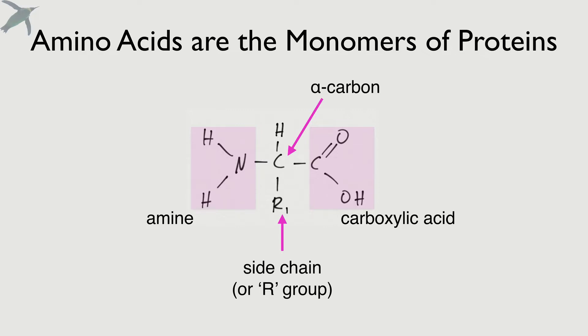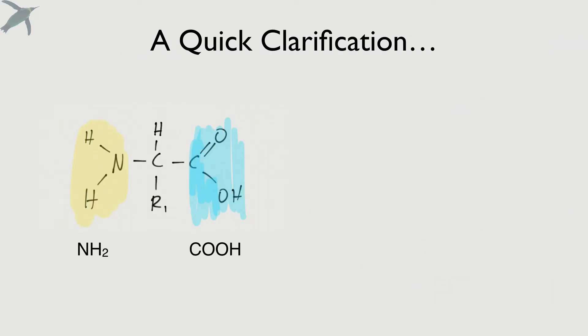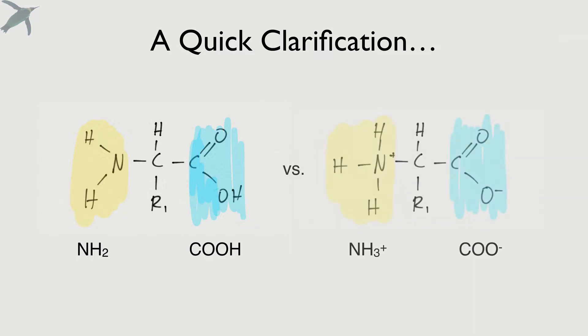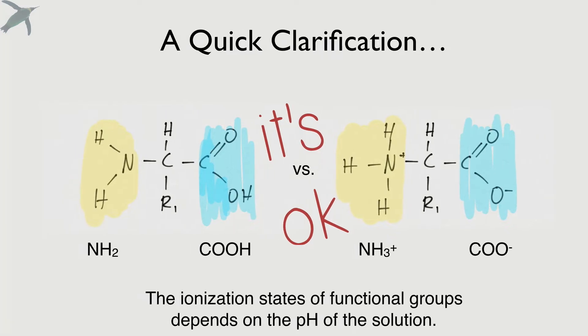That central carbon we call an alpha carbon. My students always ask about this: you're going to see amino acids drawn in two ways — without charges, and also drawn with charges. The ionization states of those functional groups depend on whether they're behaving as proton donors or acceptors, and that just depends on the pH of the solution. It really doesn't matter how you draw them, so don't get caught up with that.